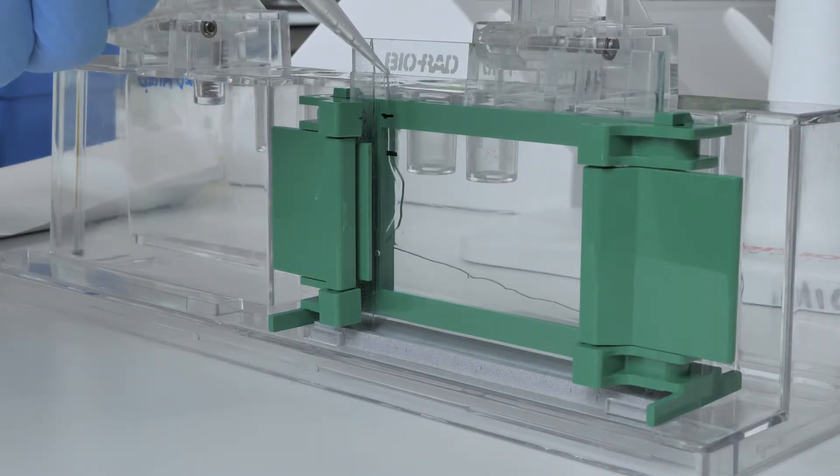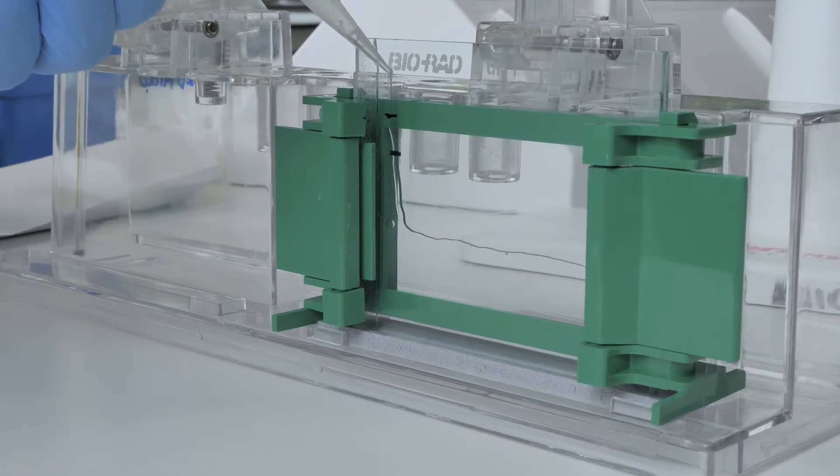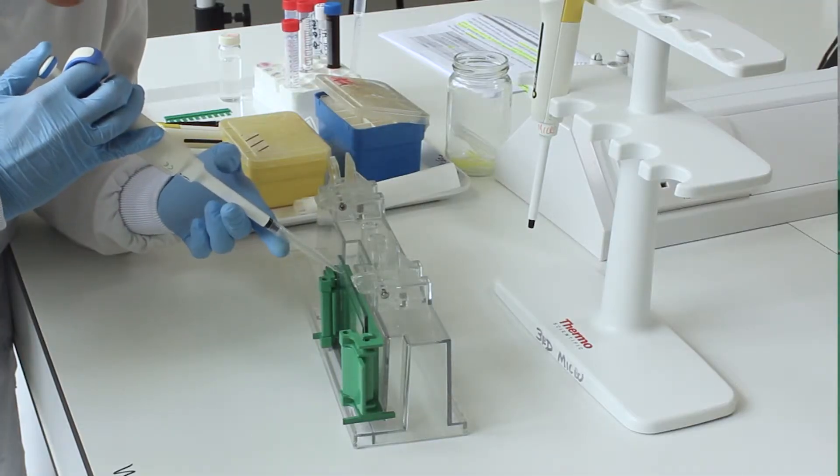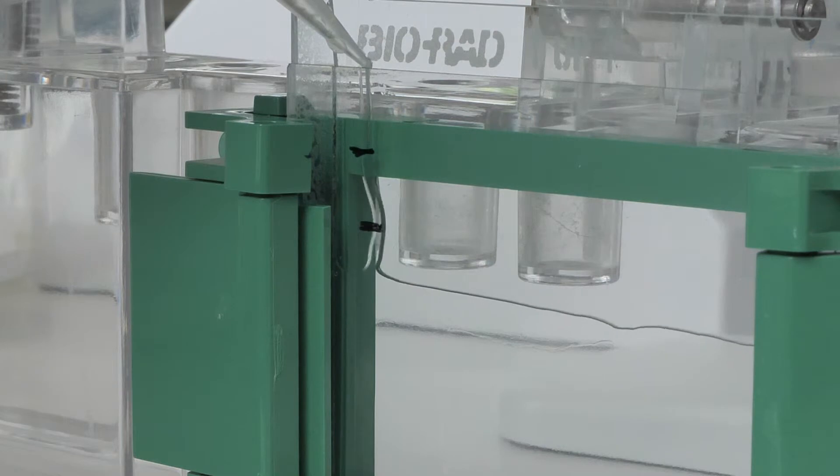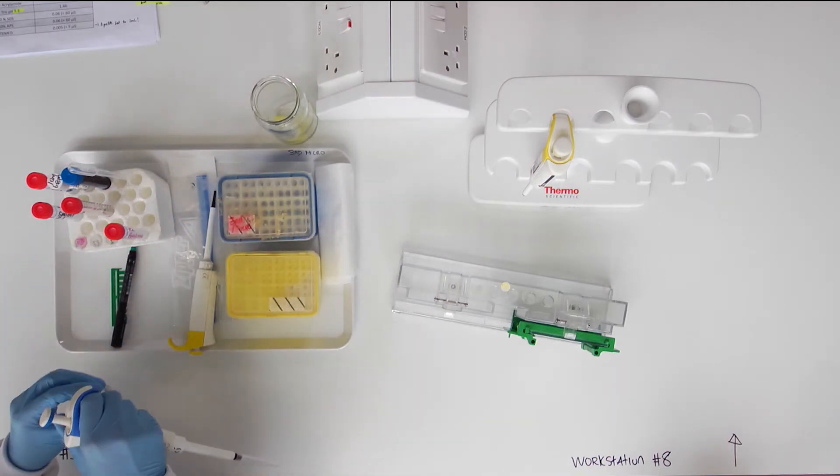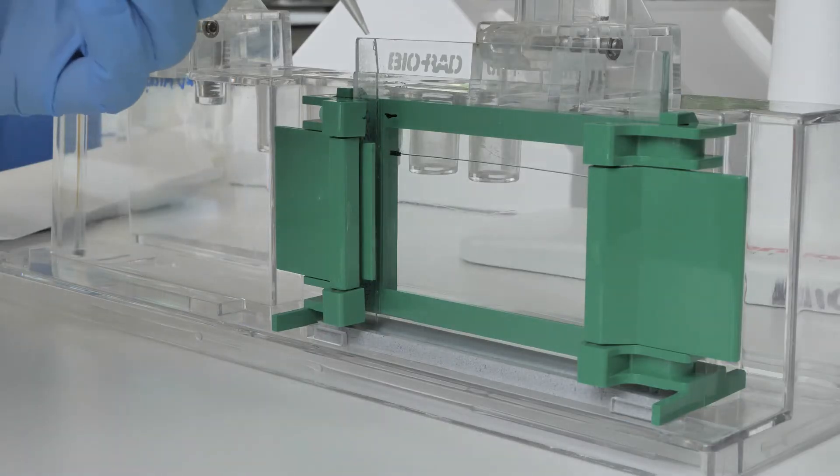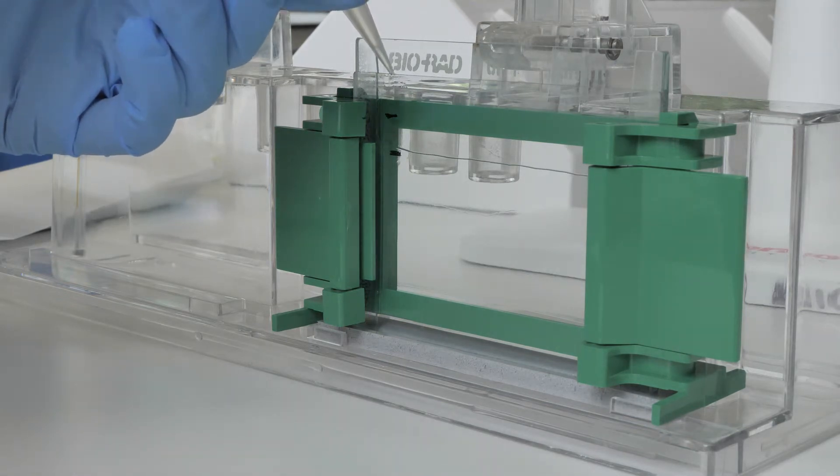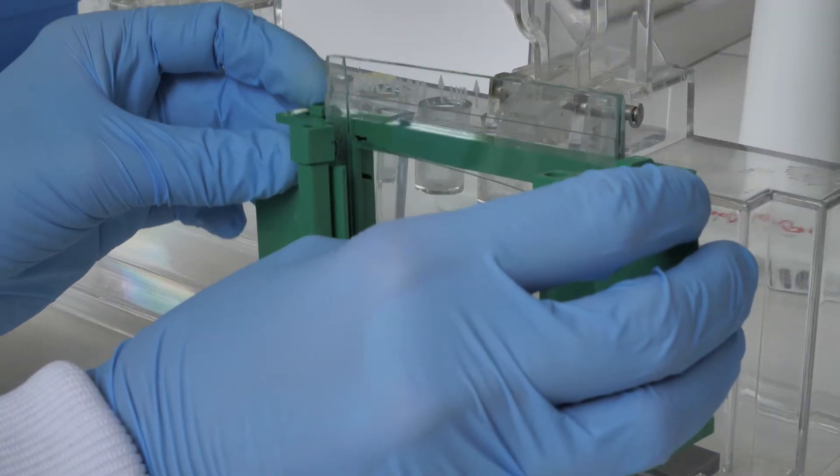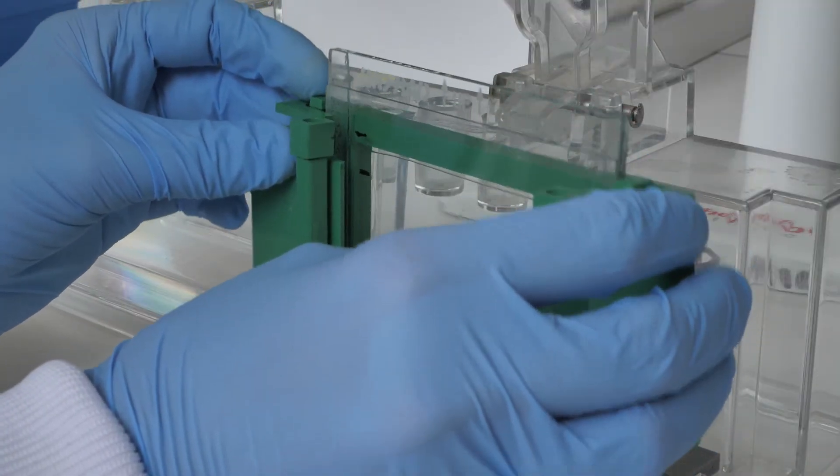Fill the gel sandwich using a 1 ml pipette until it reaches the mark you made on the plate. Pipette water very slowly down the side of the gel sandwich until it covers the gel surface. Rock the sandwich gently to eliminate bubbles and ensure a smooth surface interface between the resolving and stacking gels.